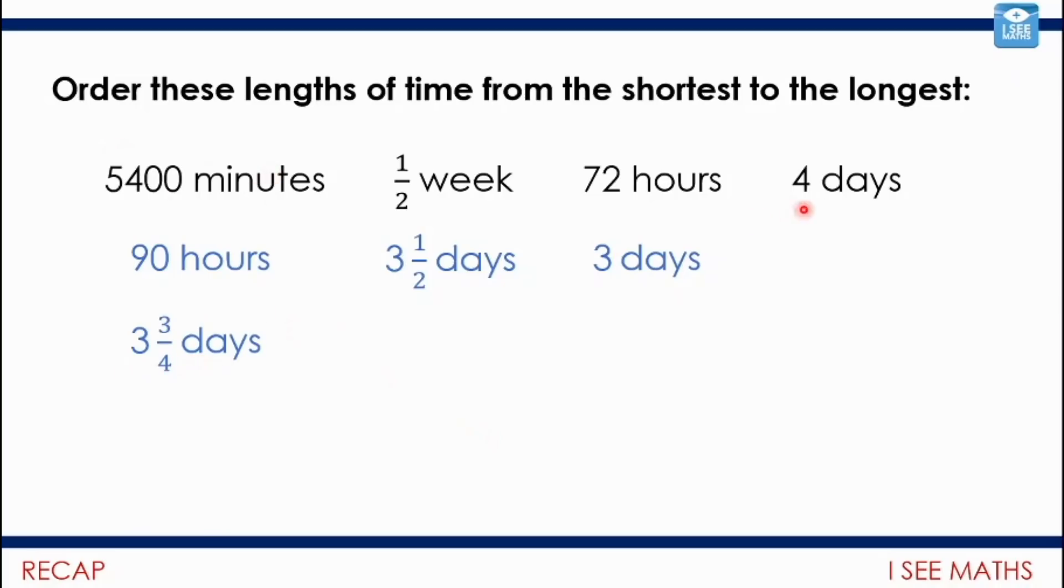So ordering them, we've got 5400 minutes is three and three quarter days. So the order: four days the longest, three and three quarter days, three and a half days, three days. Shortest to longest, of course you need to order them the opposite way around.